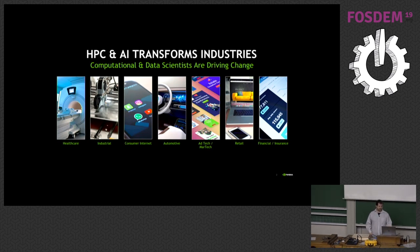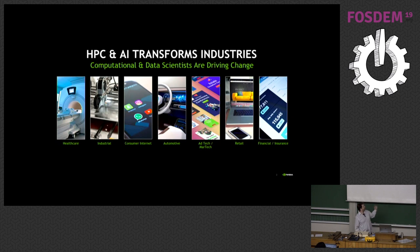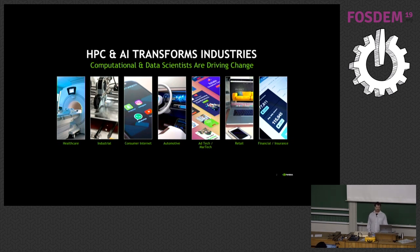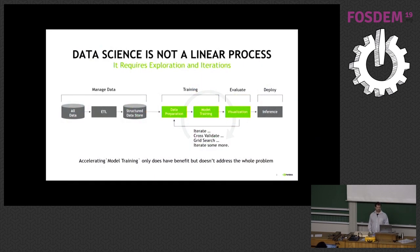For RAPIDS, probably more interesting is retail, financial industries, ad tech, and so on — those are all industries that have used machine learning already for quite a while, and they tend to use more traditional machine learning approaches: clustering, DB-scan, linear regression, those types of algorithms that aren't necessarily jumping on neural networks yet. With RAPIDS, we hope to help those industries in addition.